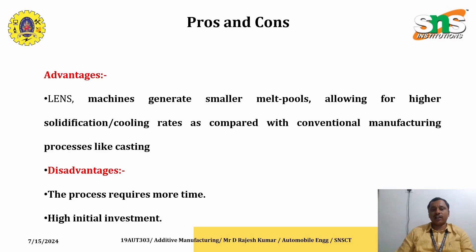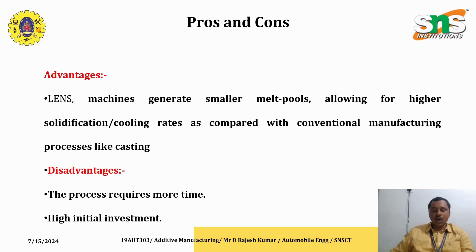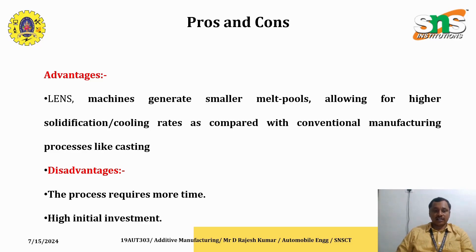This process, LENS, comes under the category of direct energy deposition. LENS and wire arc additive manufacturing are preferably used for all parts where the supply material is metallic. For metallic components, either LENS or wire arc additive manufacturing can be used, and both processes are efficient and effective in producing the desired shape of the product.